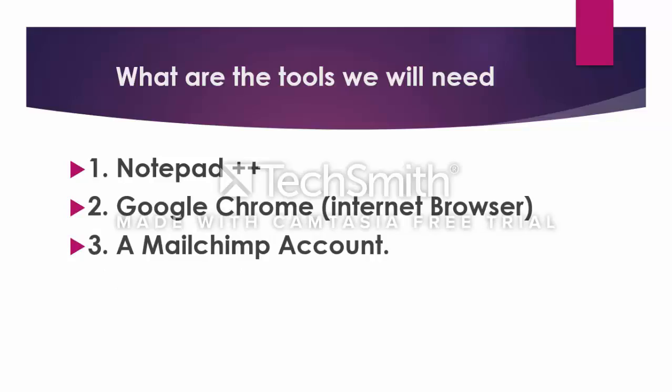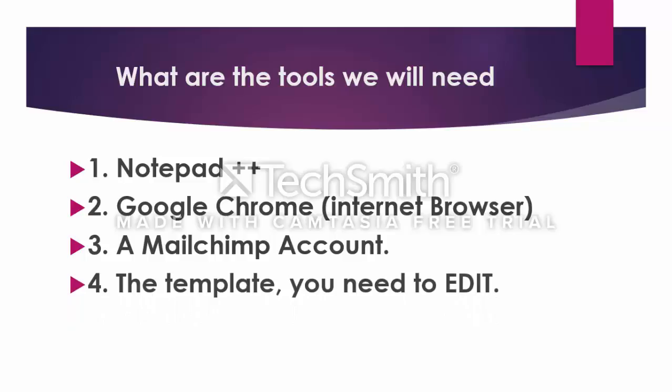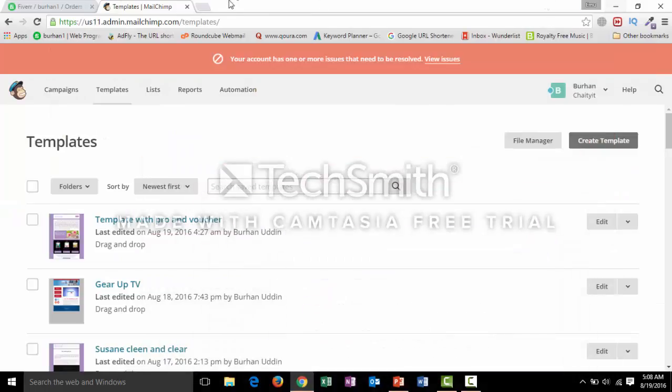We will also need a MailChimp account, because email templates don't contain the actual images — the images are hosted on different servers. We need to host our images, and for this purpose we will use MailChimp, which offers a free account for up to two thousand subscribers. So the four things we need are: Notepad++, Google Chrome, a MailChimp account, and the template you want to edit.